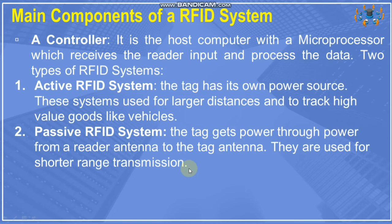If an employee wants to enter the organization or a certain department, they use that access card. Outside the door or the organization there is a reader. The employee shows the access card in front of the reader, the reader collects the information and checks it against the server inside the organization. The card has a 10-digit secret code — if both codes match, the door will open. This type of system is called a passive RFID system.